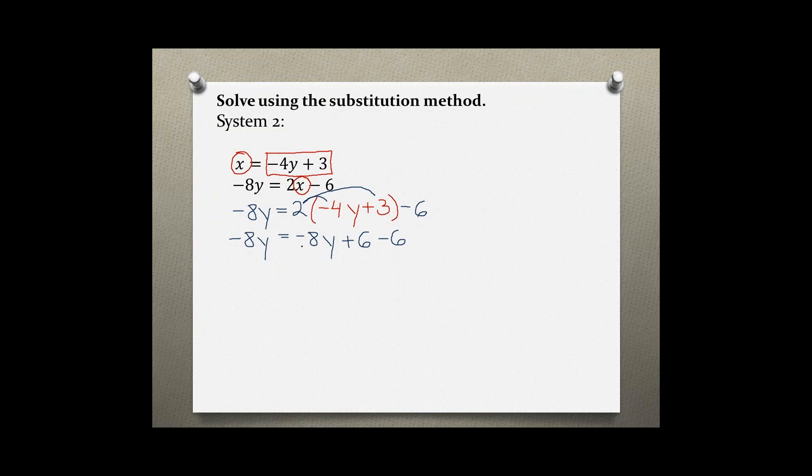So basically you always have in mind solving for y or solving for the variable so I would add 8y to both sides and then I realize that negative 8y plus 8y gives me 0 and then right over here 6 minus 6 also gives me 0. So in this case I have a true statement because 0 equals 0 and that means that I have infinitely many solutions.